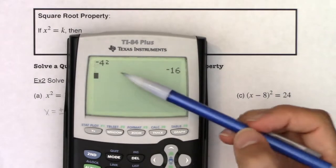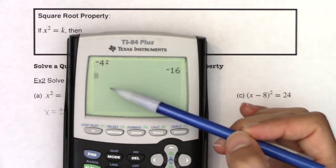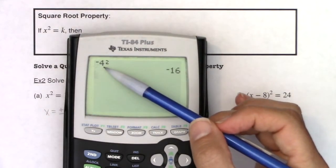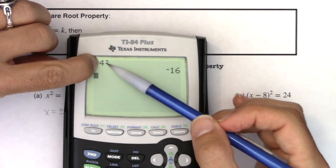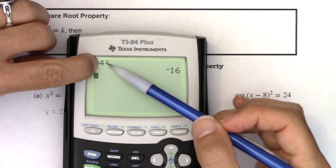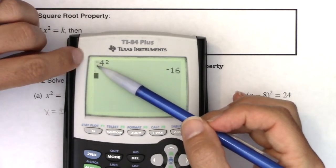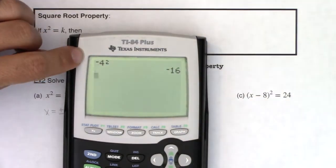Now you didn't really type in negative 4 quantity squared. Your calculator is doing PEMDAS. So it's doing the exponent first. So 4 squared is 16. And then it's doing positive 16 times negative 1, which is negative 16.